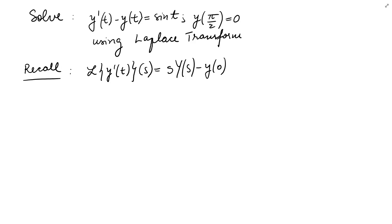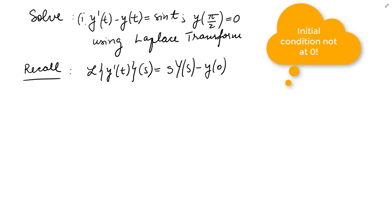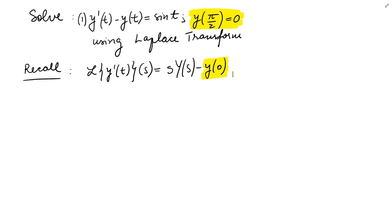In this video we are going to solve the equation y prime of t minus y of t equals sin of t, with y of pi over 2 equals 0, using Laplace transform. Why is this an interesting problem? If we want to use Laplace transform, we apply it to this equation and obtain s times Y(s) minus y(0). But our initial condition is y of pi over 2 equals 0 — that's the problem. So we are going to have to use a substitution so that our initial condition starts at 0.